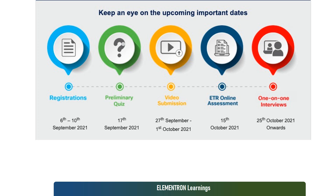After the ETR online assessment, they might take another five to seven days to announce results. After that you will have one-on-one interviews. In this video I'm going to discuss how the ETR online assessment will be conducted, and what the one-on-one interviews will look like based on last year's schedule.